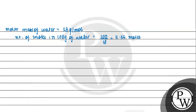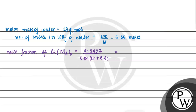Next, we calculate the mole fraction of calcium nitrate. The mole fraction of Ca(NO₃)₂ is 0.0427 moles of calcium nitrate divided by the sum of moles of calcium nitrate plus moles of water, which is 5.56. This gives a mole fraction of 0.00762.